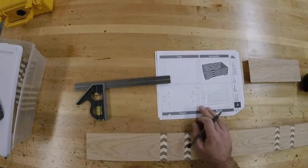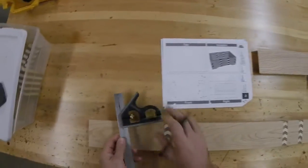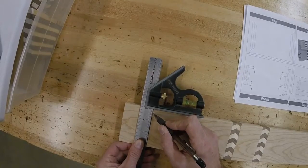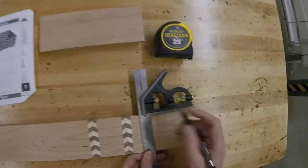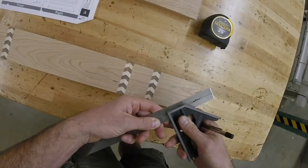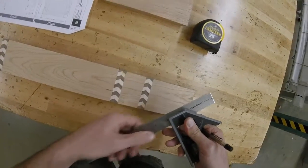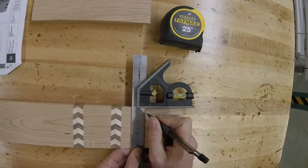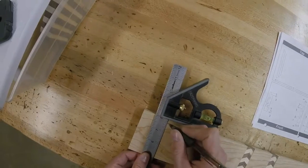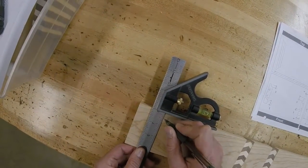This time I have my combination square. So we need to measure down 3 eighths of an inch, make sure that's right. 1, 2, 3 eighths. And we'll use a straight edge to connect those lines.